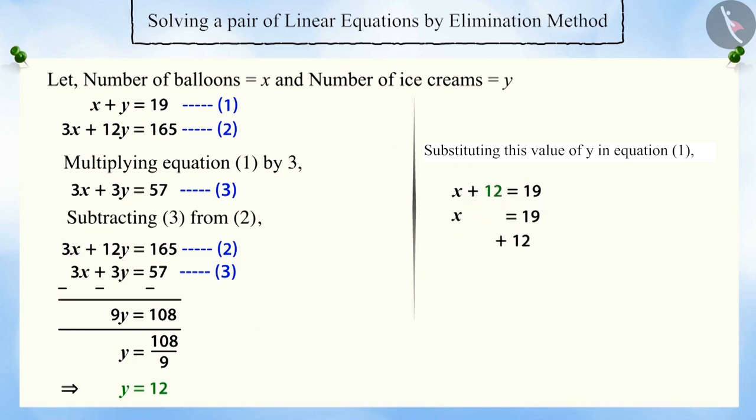Solving further, we get x is equal to 7. Therefore, Rahul bought 7 balloons and 12 ice creams.